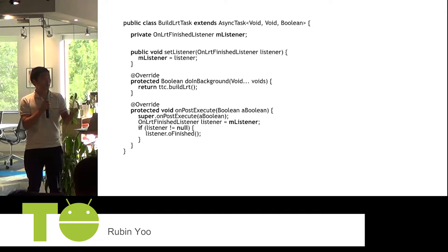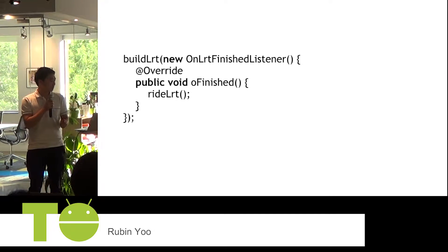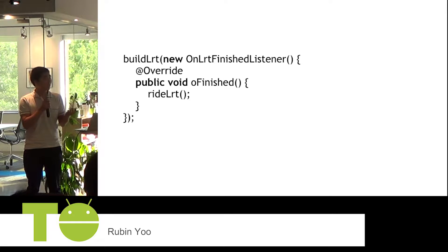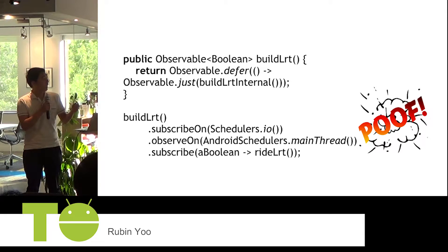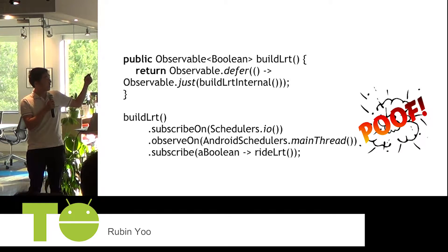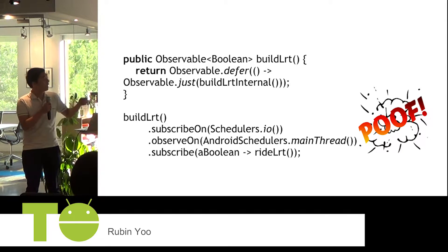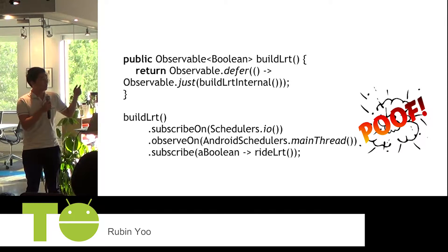With RxJava, I don't have to create an AsyncTask or create my own listener. The buildLRT method has been refactored to return an observable. When I subscribe, it notifies me and I can ride the LRT when it's finished. There are also two very powerful methods here: subscribeOn and observeOn. The reason they're powerful is that you can land on any thread you want. To manually code this takes a lot of code and it's not easy.